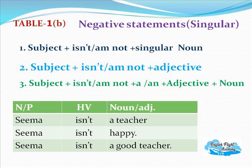In tabular form — negative singular statements: Seema isn't a teacher. Seema isn't a good teacher. This is written in negative form for singular subjects. You can take other pronouns and practice similarly. Use contractions more, because contractions are used by native speakers a lot. If you practice from now, you will become perfect and it sounds very natural when you speak with contractions in English.